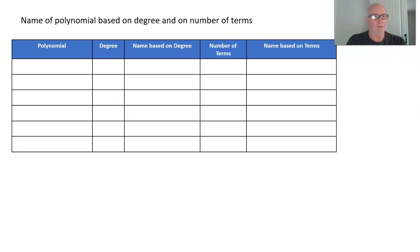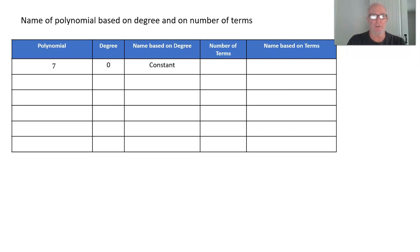Now the next thing we want to do is name a polynomial, and we have two names. One is based on degree, the other is based on the number of terms. Here's a polynomial: 7. The degree of that polynomial is 0, so anything with a degree of 0 is called a constant. There's only one term, so anything with one term is called a monomial.